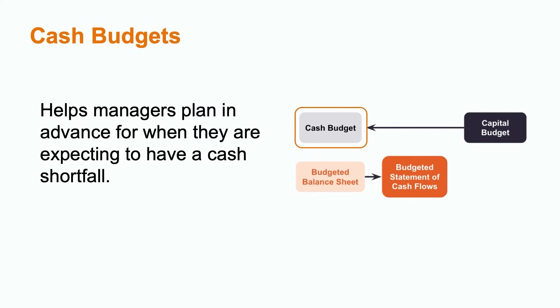Next is the cash budget, which is one of the most important budgets for the organization, as without cash the company likely cannot continue to operate. Managers need to be able to plan in advance for when they're expecting to have a cash shortfall so that they can obtain financing from either a bank or investors before it's too late. We'll look at an example of the cash budget shortly.